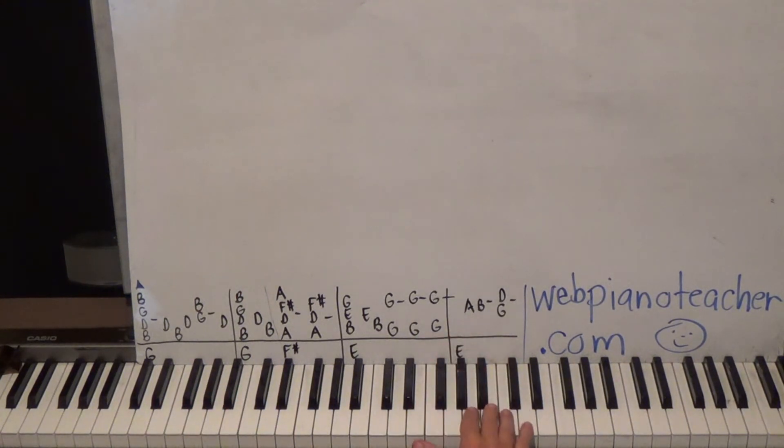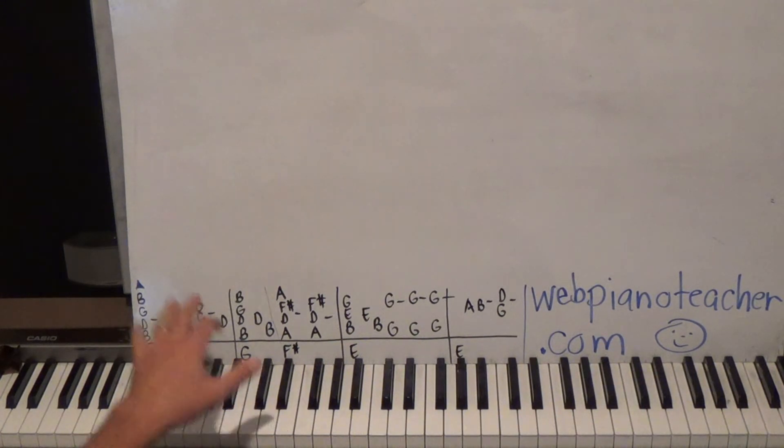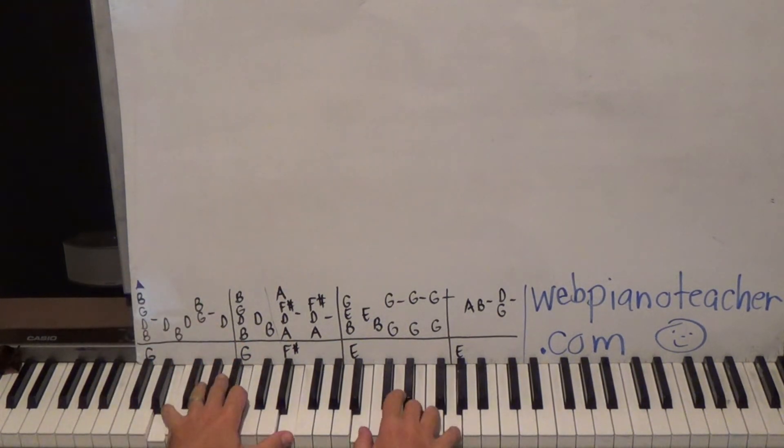Then the right hand will have A B. And then we're going to play G and D with one and five. So if I did just the right hand from here to here I have. And I put the left hand with it. Very simply first just the block chords. Now I'll vamp with my left hand.